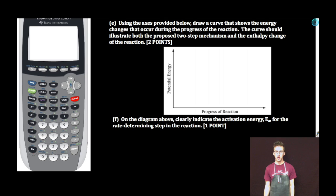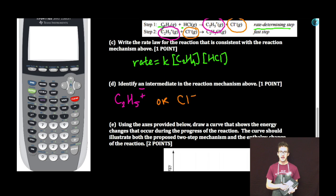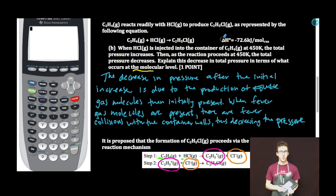Part E. Using the axes provided below, draw a curve that shows the energy changes that occur during the progress of the reaction. The curve should illustrate both the proposed two-step mechanism and the enthalpy change of the reaction. As I take a look at my mechanism, I have two steps, which indicates that as I draw my energy profile, it's going to require two humps, one for each step. Also important to recognize that the reaction is exothermic, indicated by a negative enthalpy change for the reaction provided earlier in the problem. So the potential energy of my products is going to be lower than the potential energy of my reactants, because some of the energy has been given off in the form of heat.